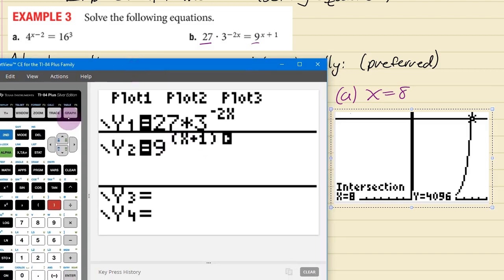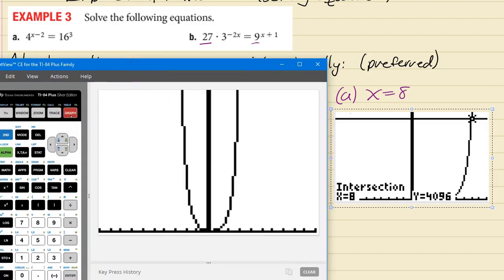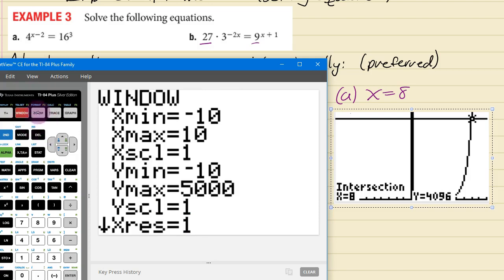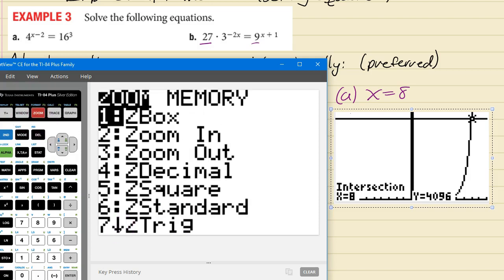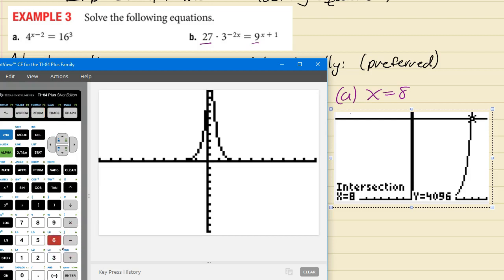So then we can try to graph that. And here the problem is with this window we can barely see where it is. It looks like the y coordinates aren't actually that big where they intersect. So maybe we can go back to a normal window. So maybe hit zoom and press number 6 for z standard.